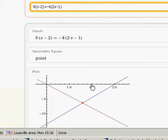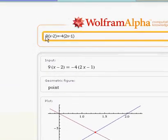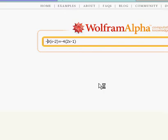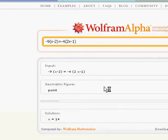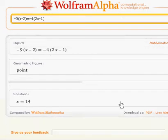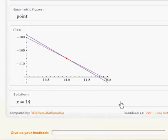Negative 4, 2x minus 1. Oh yeah, I did. Got to pay attention. It's negative 9. X equals 14. Yeah, sorry about that. Again, paying attention is very important. X equals 14.